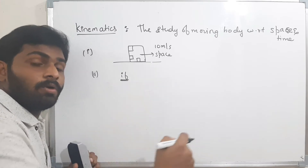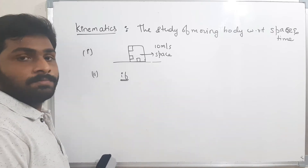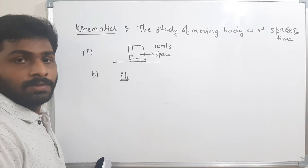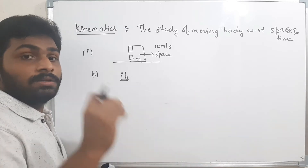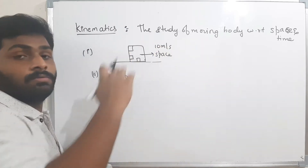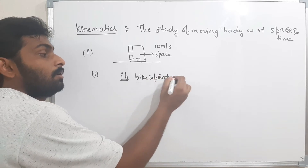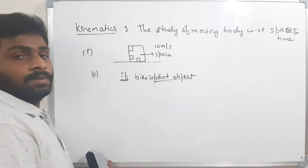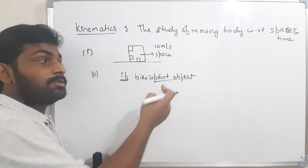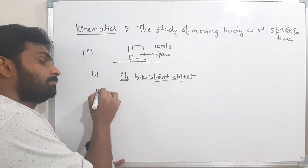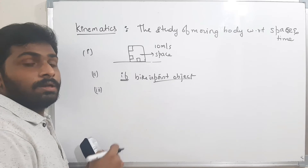Second assumption: if the distance traveled by the body is very large compared to the size of the body — for example, if I ride a bike for one kilometer, the size of the bike is very small compared to one kilometer — then I have to assume the bike is a point object, a point-sized body. Whenever the distance traveled is very large compared to the size of the body, I assume the body is a point-sized body.